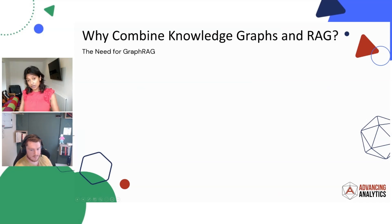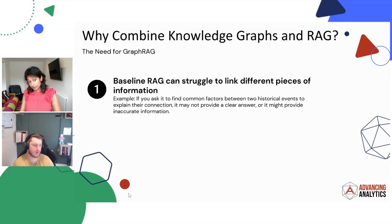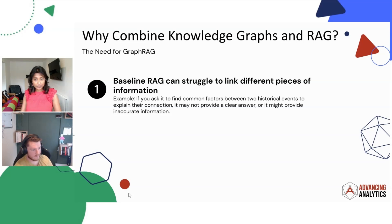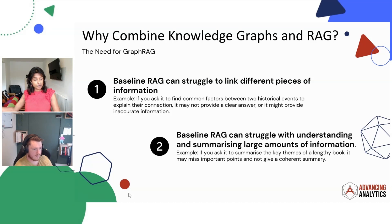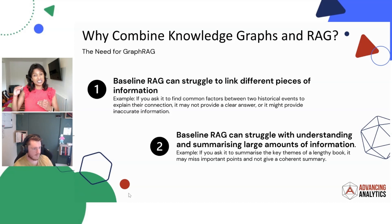Why, if we have RAG, would we use knowledge graph? There are many reasons why we want to use a knowledge graph instead of a baseline RAG implementation. Let's say you have a large corpus of documents - contracts - that you're looking for a particular clause in. With a baseline RAG implementation, you won't necessarily be able to look between those documents and find the clause you're looking for, whereas if we embed them into a graph database, we should see a node for the clause connected to that corpus of documents. And if you've got a huge corpus of information, baseline RAG would struggle because of the context window - it would struggle to give accurate or coherent summaries, whereas knowledge graph's ability to traverse the entities and nodes does that a lot more effectively.